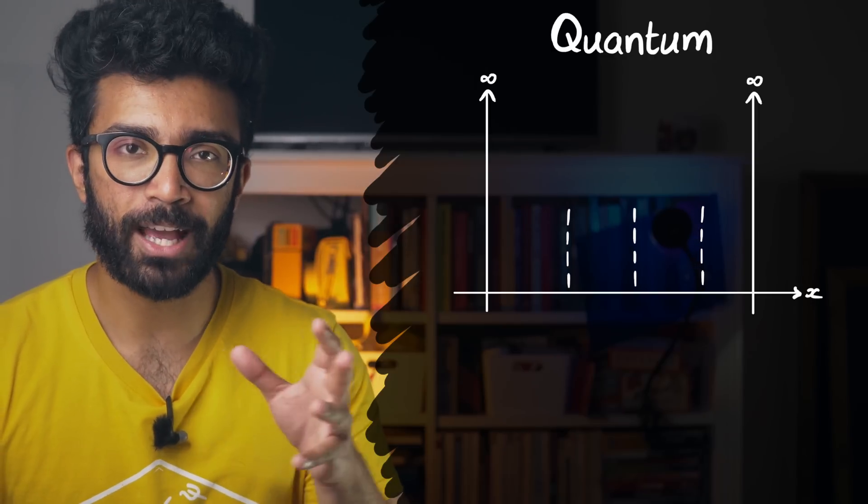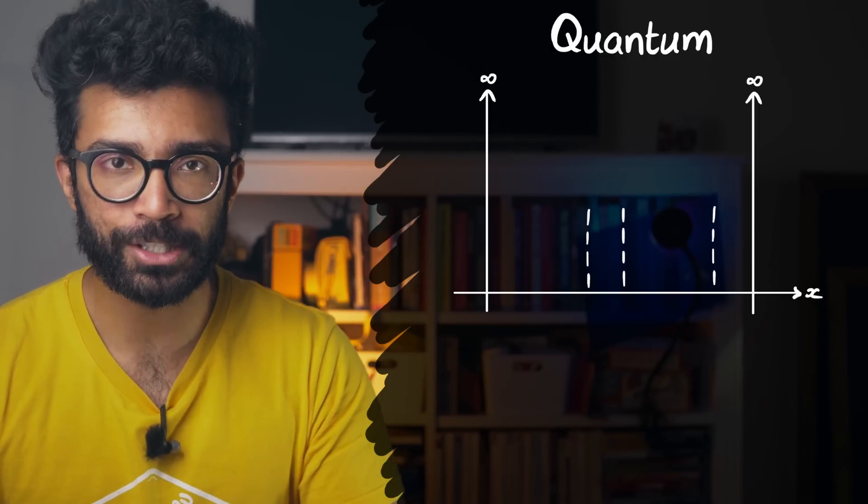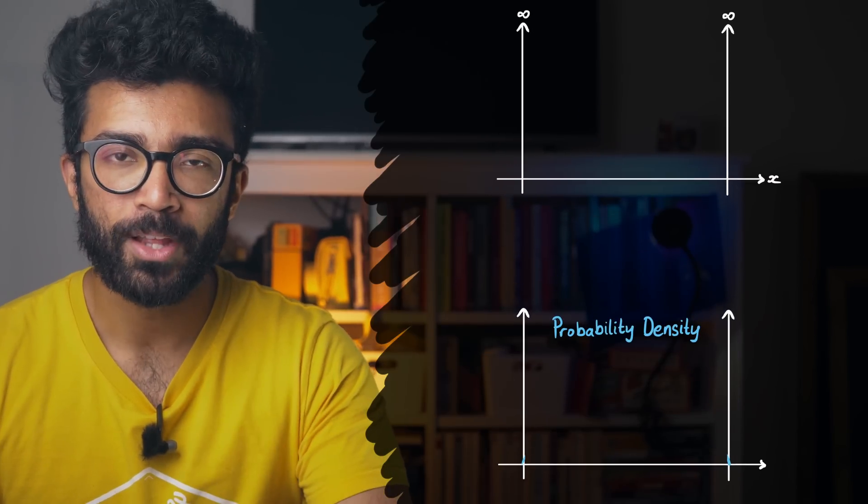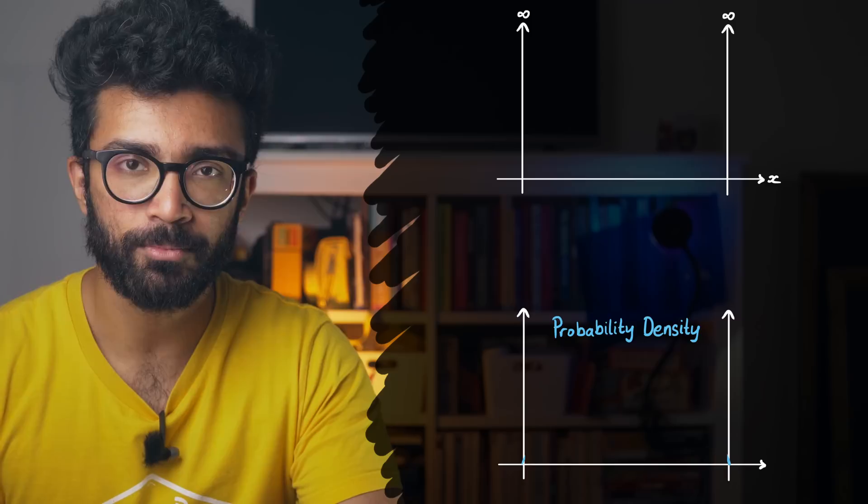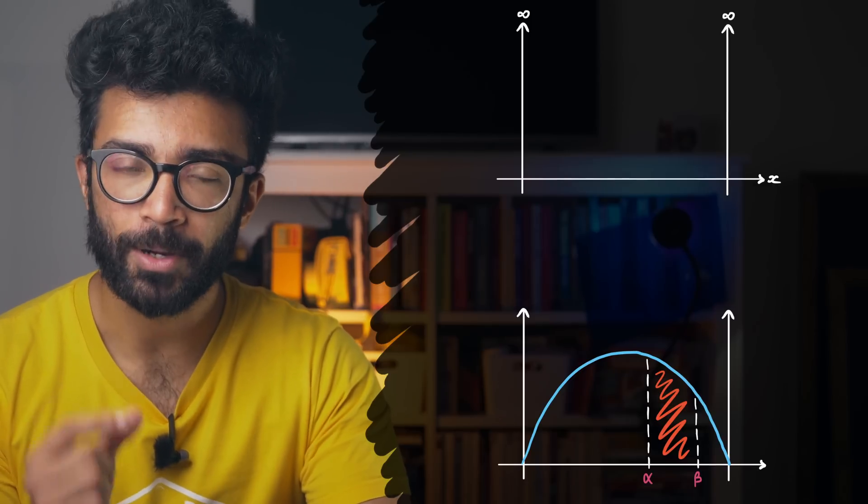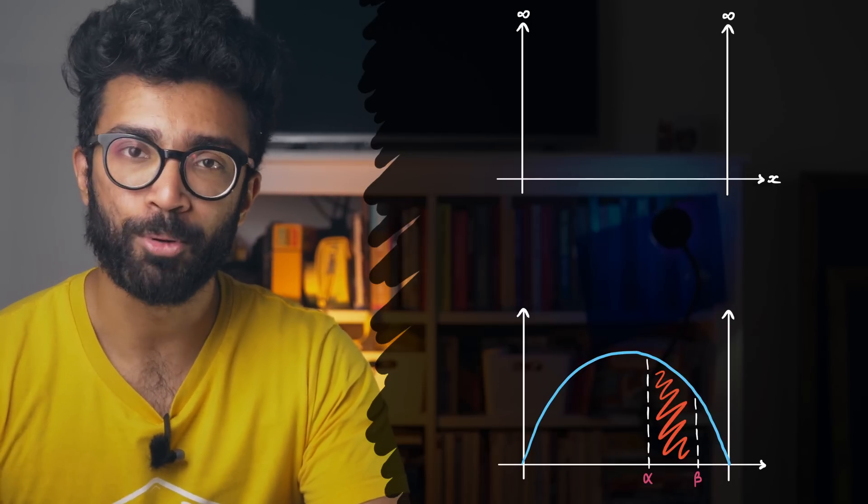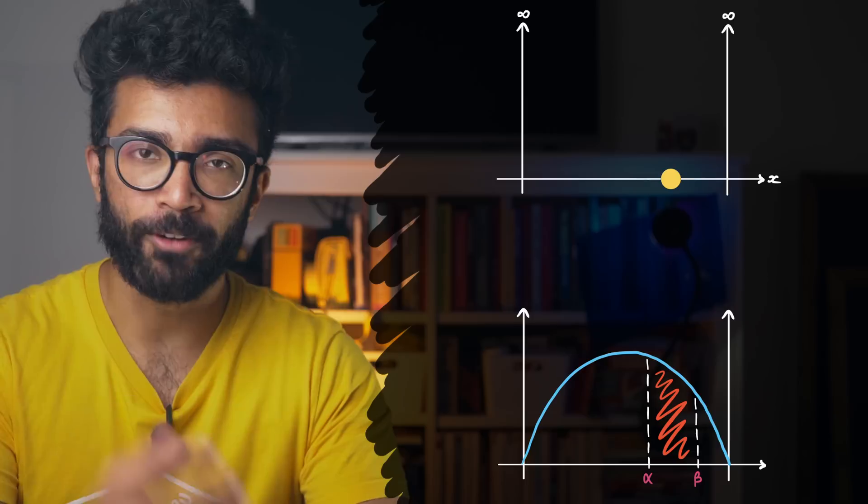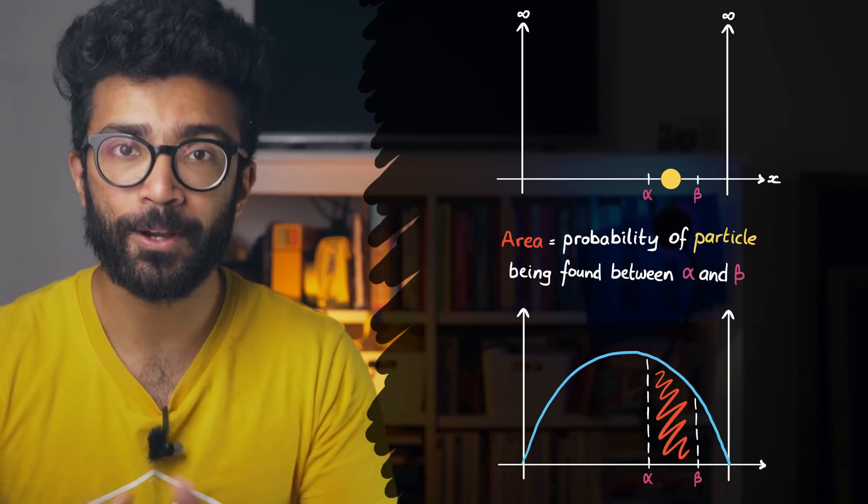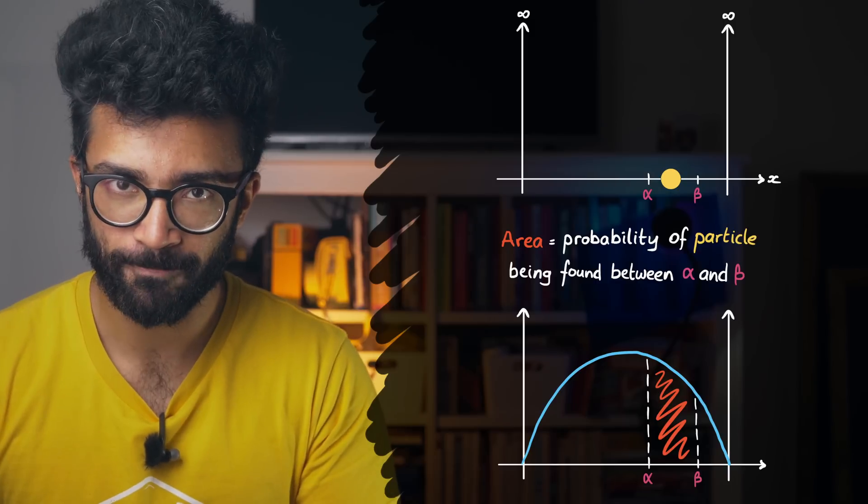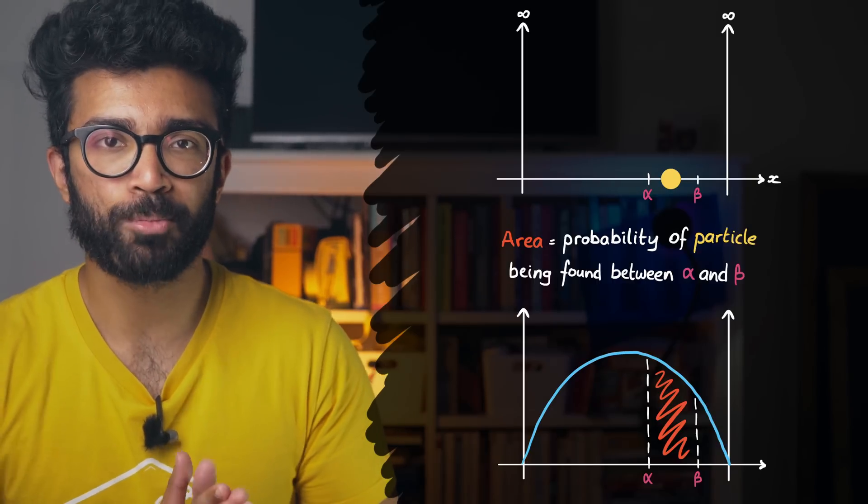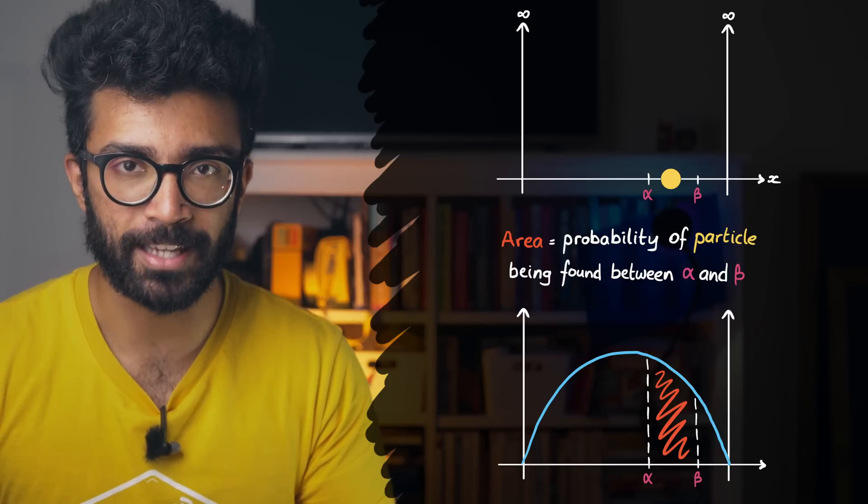Well, we can do this because we have access to a mathematical function known as the probability density function. For simplicity, let's say the probability density function for this system looks like this. We can take this function and calculate the area underneath it between two points on our line to calculate the probability of finding our particle between those two corresponding points. And we can do this for any two points that we want. That's why this function is called the probability density. It shows how probability is distributed through space in this case.